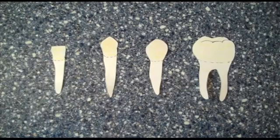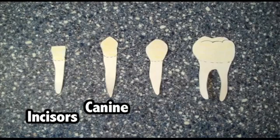There are certain types of teeth that do specific jobs. They are incisors, canine, premolars, and molars.